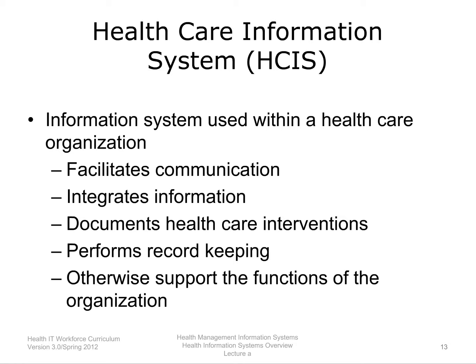Having defined the concept of an information system and identified the major categories of information systems, the next step is to unite information systems to the health care domain and describe the various types of technologies that support a health care information system. As defined by Vogel and Perrault, 2006, a health care information system is an information system used within a health care organization to facilitate communication, integrate information, document health care interventions, perform record-keeping, or otherwise support the functions of the organization. An example would be a hospital information system, HIS — a system which is comprehensive in that it contains the clinical, administrative, financial, and demographic information about each patient. Additionally, administrative, building, and financial systems that facilitate the revenue cycle and other administrative tasks are components of information systems used in provider and health care organizations.